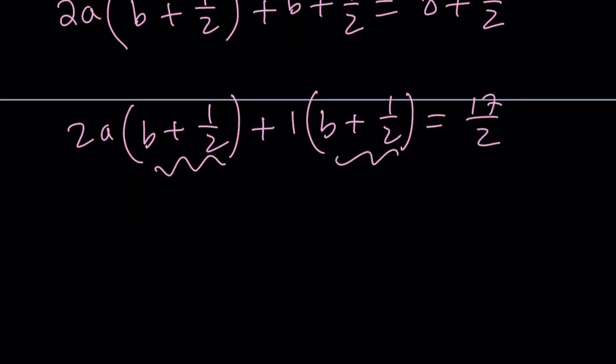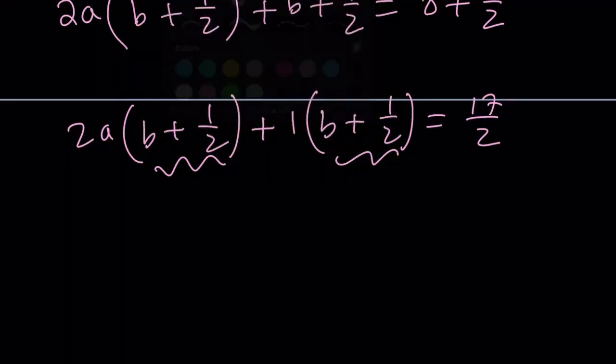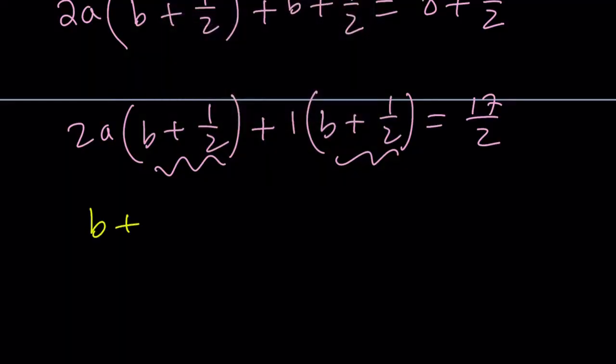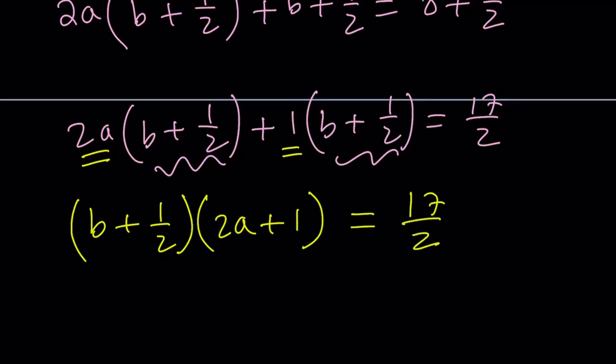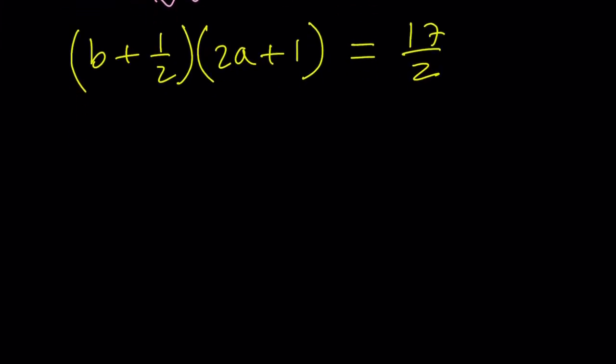Now we know that b plus 1 half is a common factor, right? So we can take it out. b plus 1 half multiplied by 2a plus 1. That's how you write the second factor. So this concludes the factoring part. But the issue is we have a b and 1 half, but we have a 2a here, so they're not really kind of compatible.